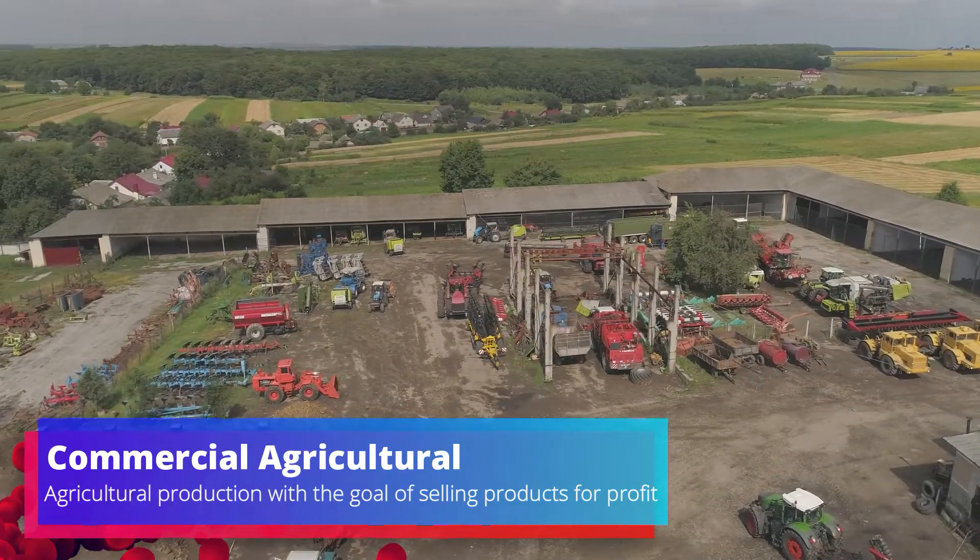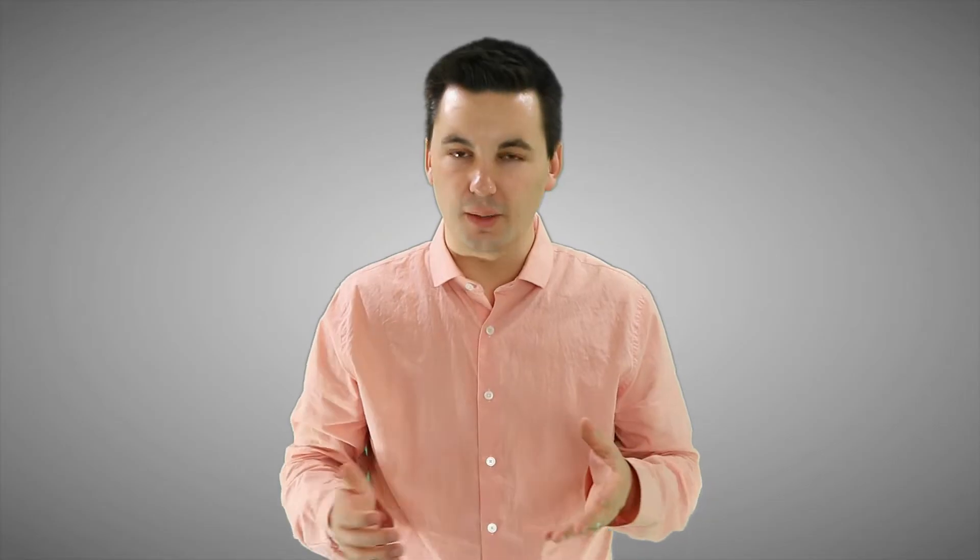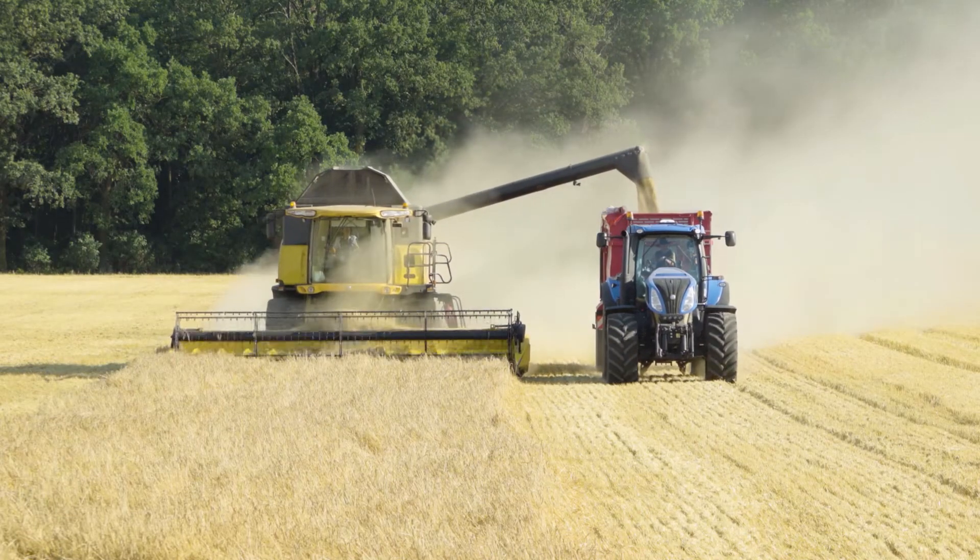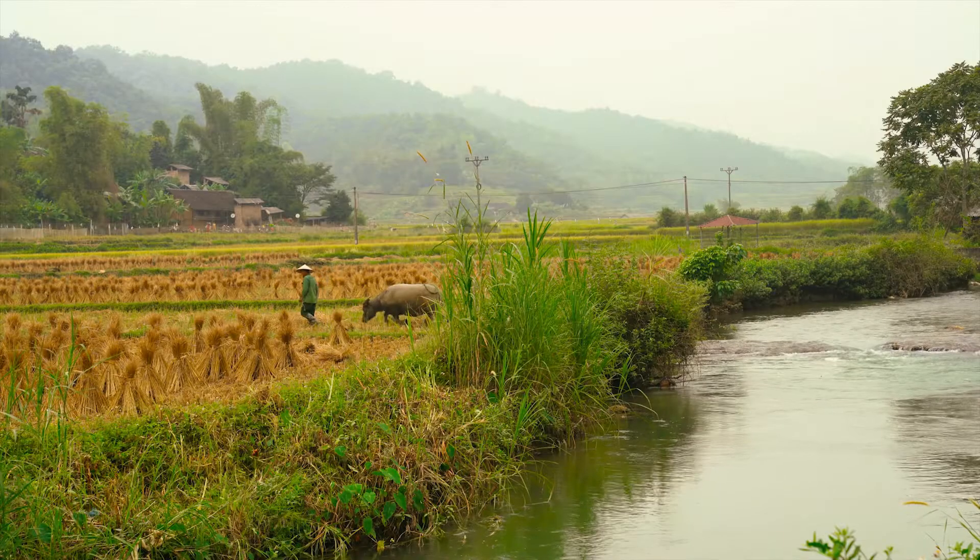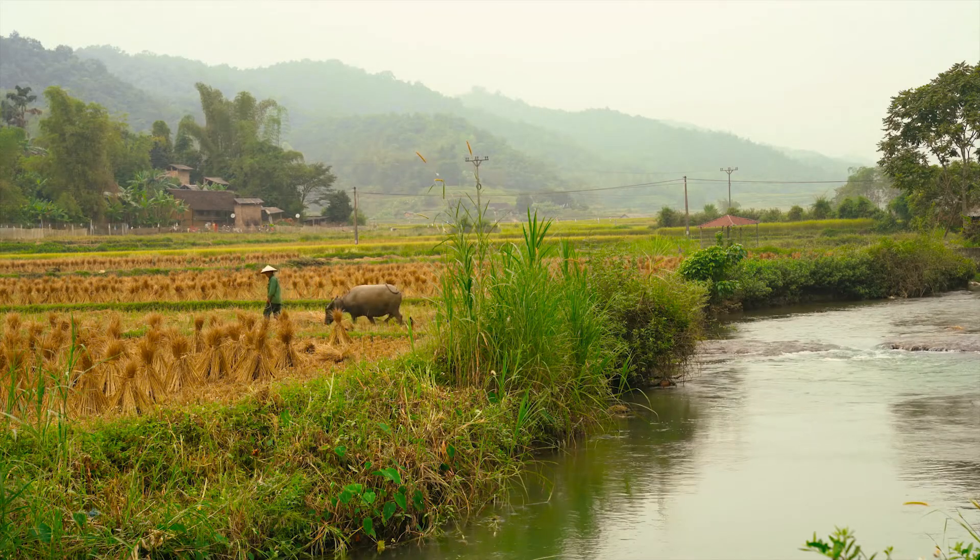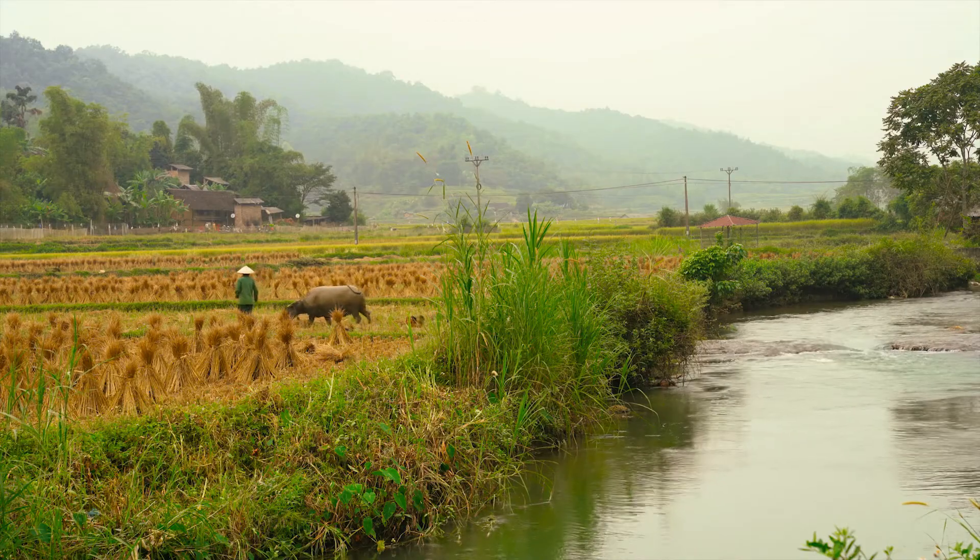Here less human labor is used due to the amount of machines that are utilized. Globally we can see that countries that are located in the core or are more developed countries use more machines and have more commercial agriculture. While countries located in the periphery or less developed countries traditionally have more of their population working in the field of agriculture.